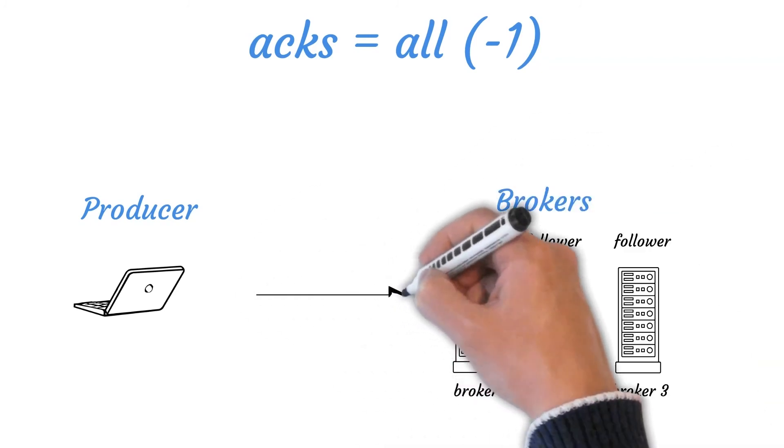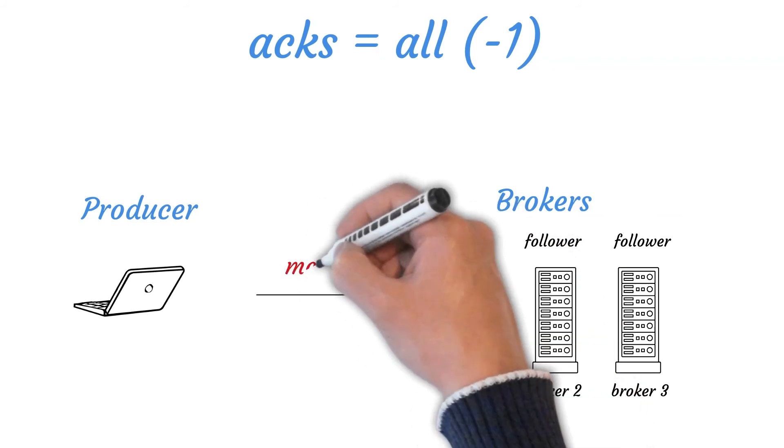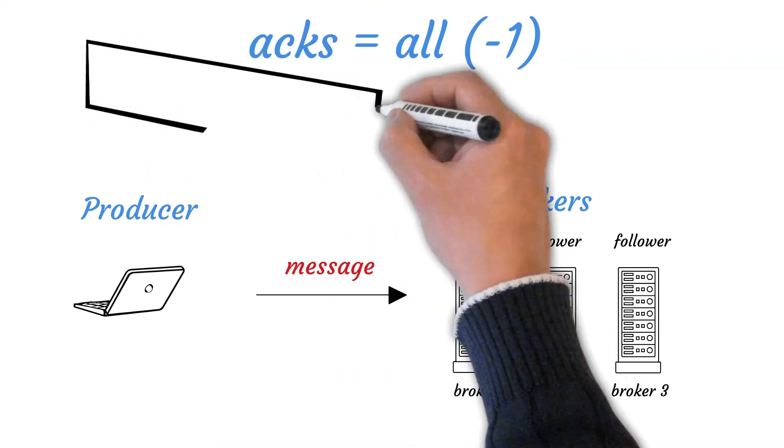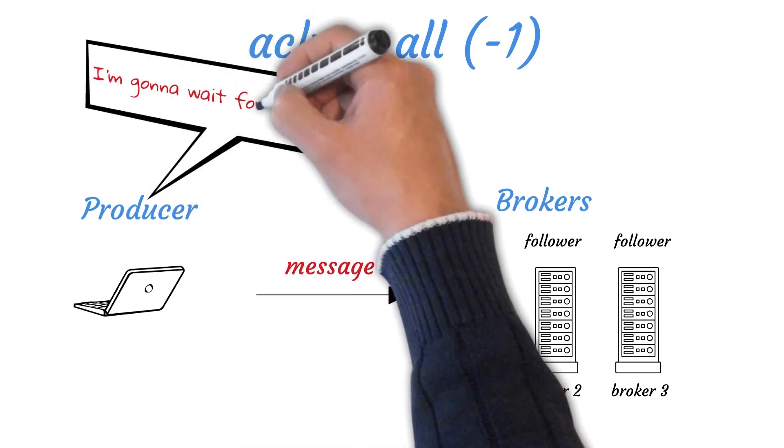The leader will wait for the full set of in-sync replicas to acknowledge the record. It means that it waits till all followers replicate the message.